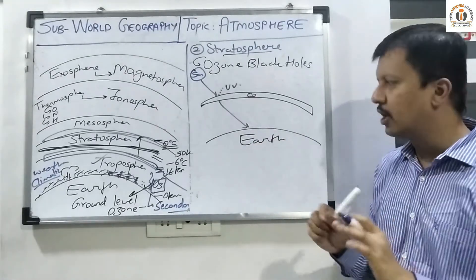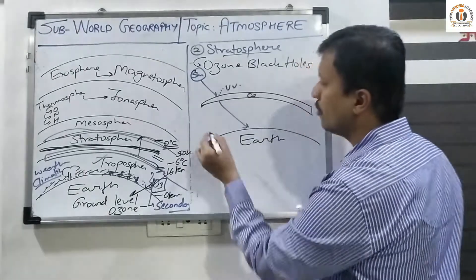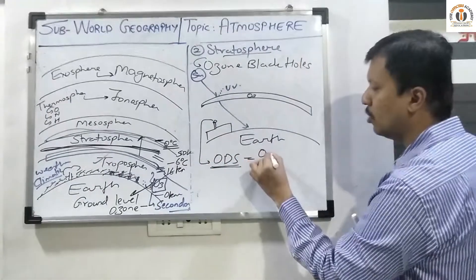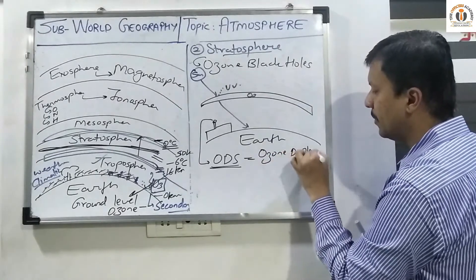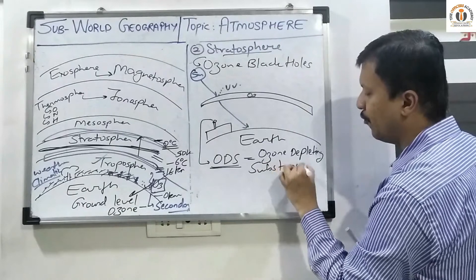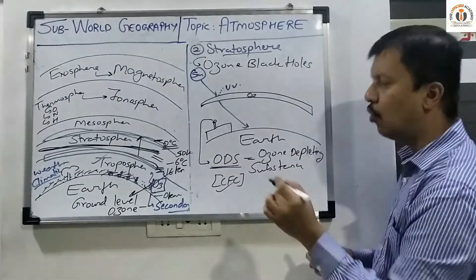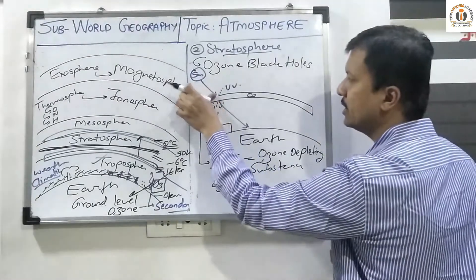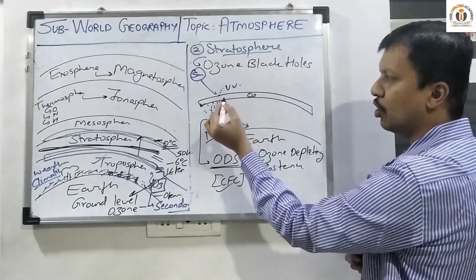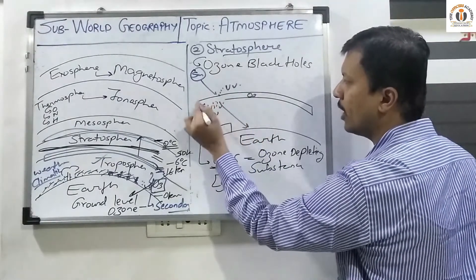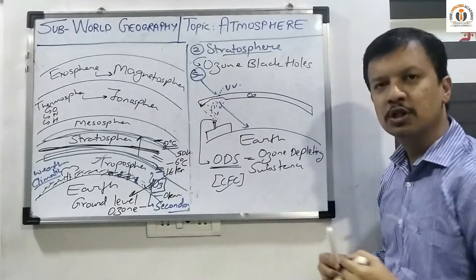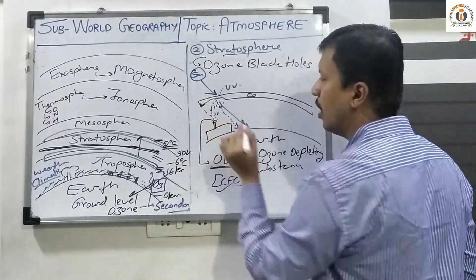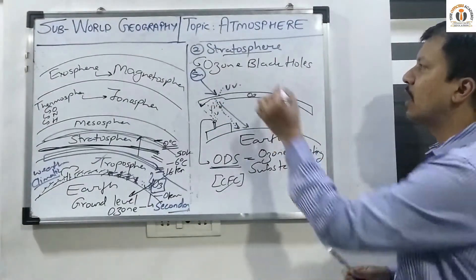Because of industrial pollution, certain pollutants termed ODS — ozone depleting substances — such as CFCs (chlorofluorocarbons) react with the ozone layer at a height of 22 kilometers and keep on eroding it. The ozone layer becomes thinner and thinner, and the more it thins, its capacity to absorb UV rays decreases. A part of UV rays then manages to reach the earth's surface. This thinning of the ozone layer is termed ozone black holes.